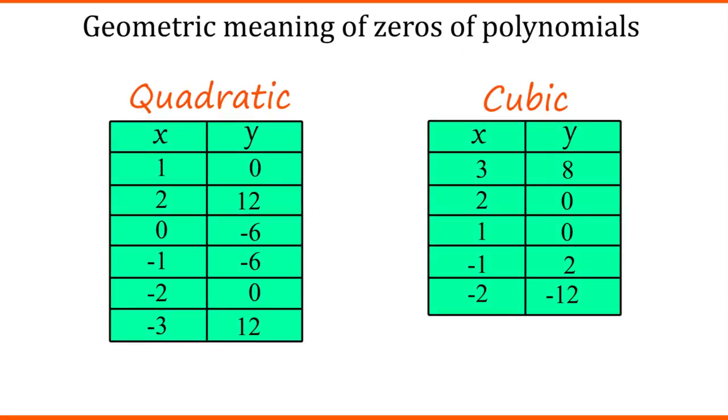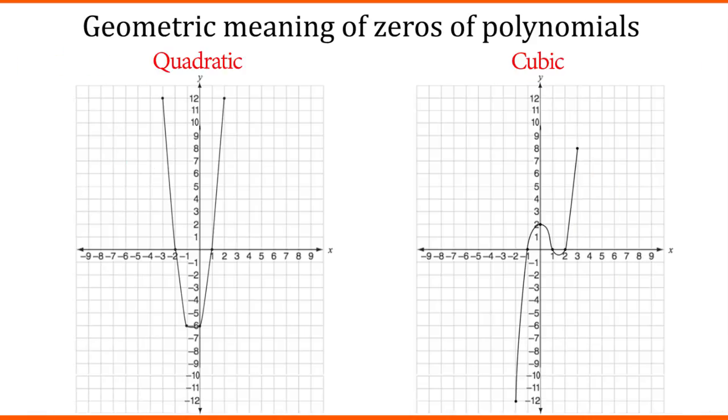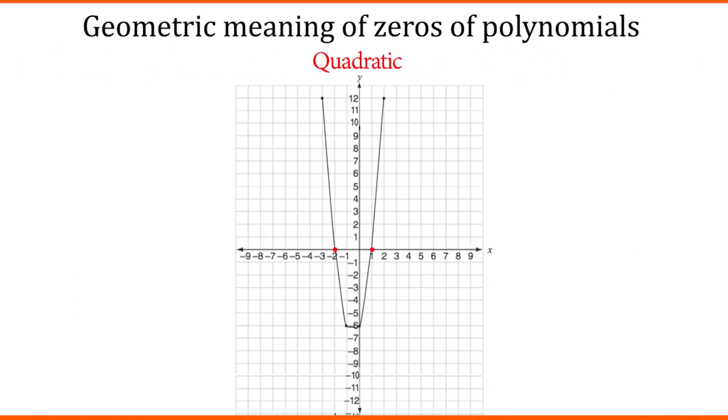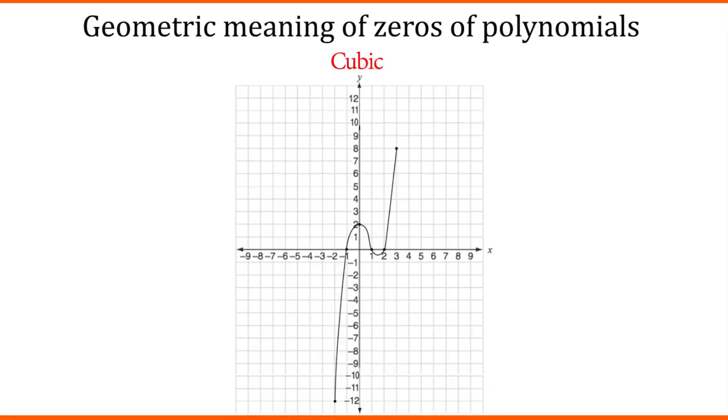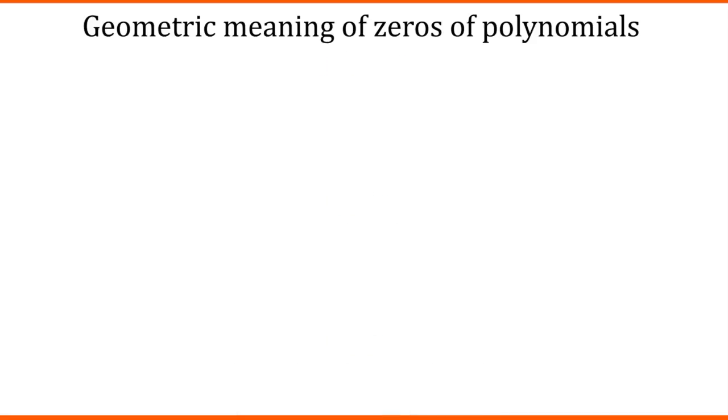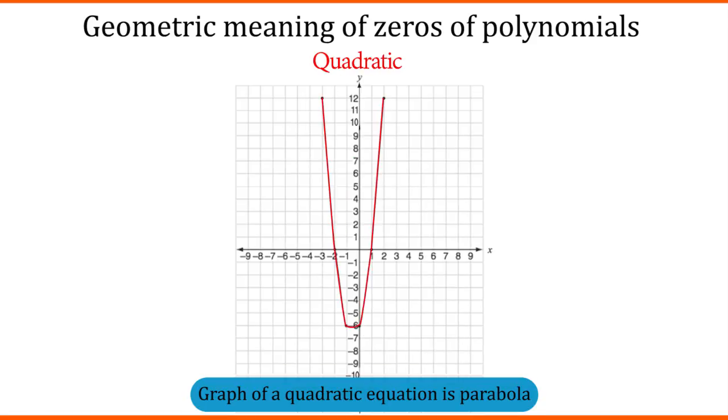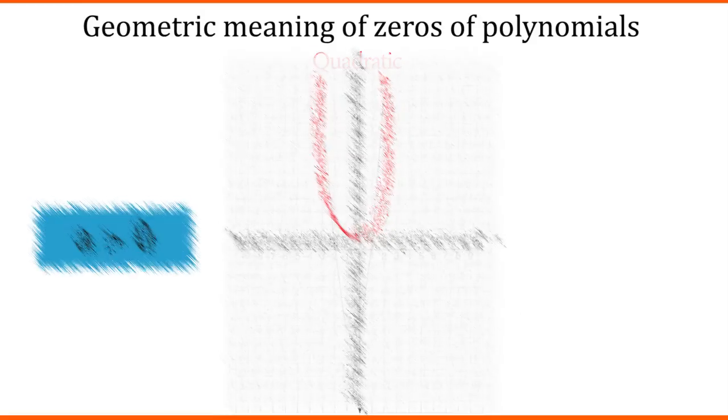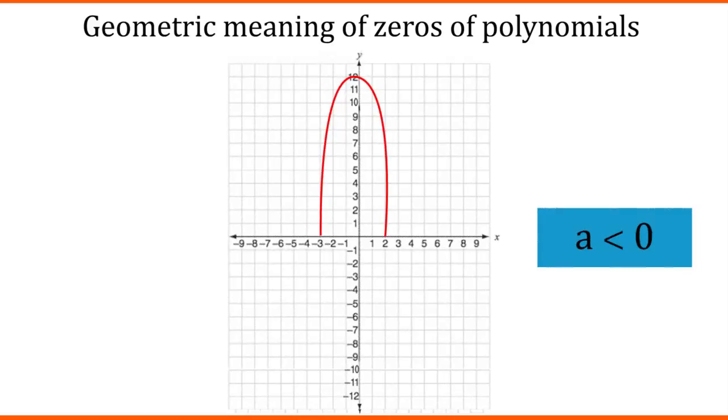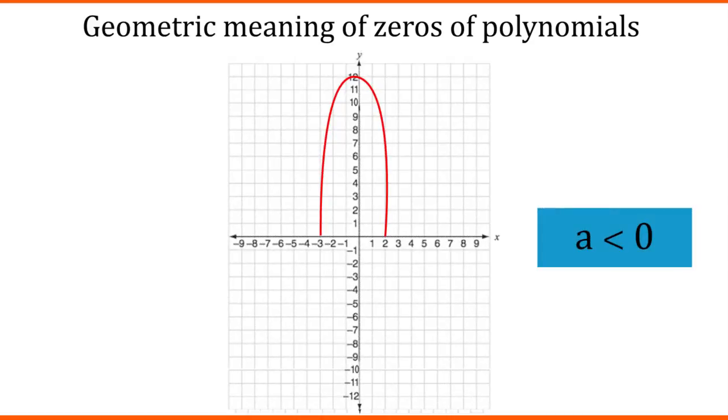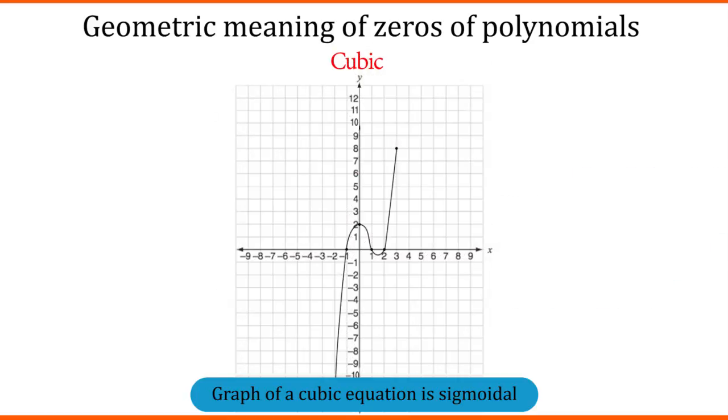Similarly, when we put values of x and draw them on graph for quadratic and cubic equation, we will get these graphs. Now, if you observe the graphs, we got 2 zeros of quadratic equation and 3 zeros of cubic equation. The graph of linear equation is a straight line and the graph of quadratic equation is a parabola. If a is greater than 0, then it opens upwards like u. And if a is smaller than 0, then it will open downwards. Whereas, the graph of a cubic equation is a sigmoidal shape.